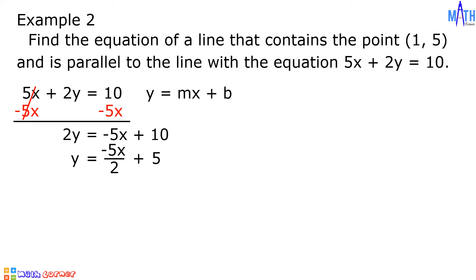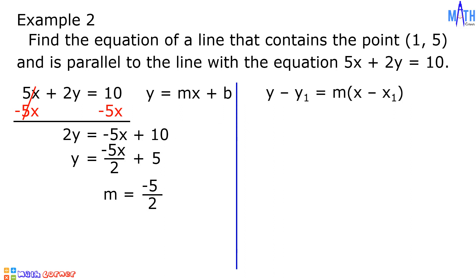The value of m is equal to -5/2. It means that the line that contains the point (1, 5) has a slope of -5/2. Let us substitute the given values in point-slope form: y - y₁ becomes y - 5 = m, which is -5/2, times (x - x₁), which becomes x - 1.